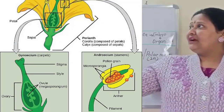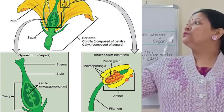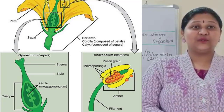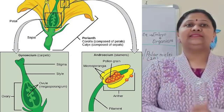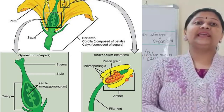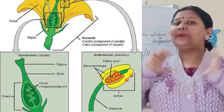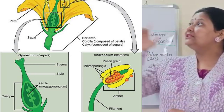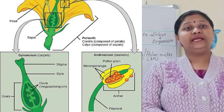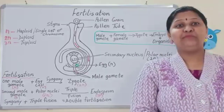See the structure of a flower — it has four whorls. The first one, the outermost, is calyx — the sepals are known as calyx. The second whorl is corolla, and that is the petals.